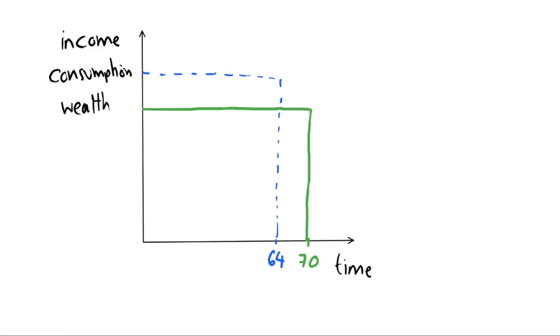Some of that income for once we reach the age of 64 and we retire, we can still keep consuming at the same rate until we turn 70 and we unfortunately pass away. And then our consumption goes to zero because we are no longer around to consume anything.